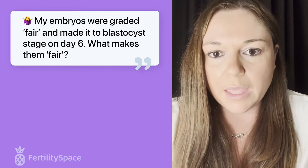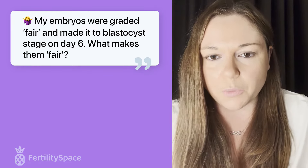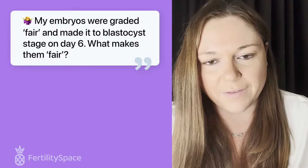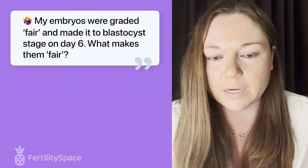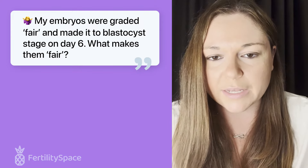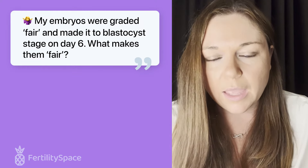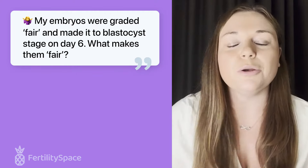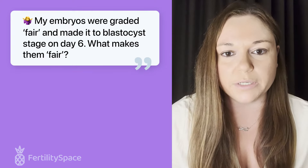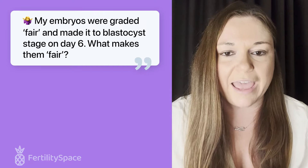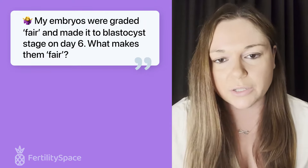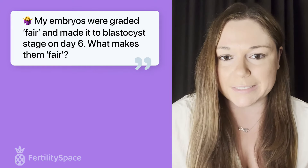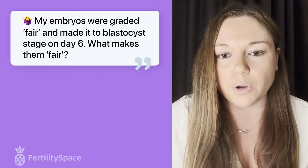What makes an embryo fair in grading? A fair embryo is graded as a BB embryo — meaning it has an average or B quality inner cell mass and a fair or average trophectoderm. Any embryo graded as BB is considered fair. Any embryo with a C quality is considered poor quality, and any embryo with an A grade is considered good quality. Keep in mind that every clinic grades things a little differently — one clinic might use the Gardner Scale while another might use different notation. I always encourage patients to ask their clinic for a detailed explanation of their specific embryo grading system.